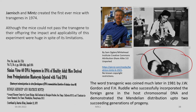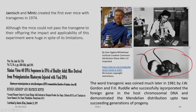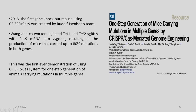At the time, the word 'transgenic' was not known. It was coined in 1981 by J.W. Gordon and F.H. Ruddle, who successfully incorporated the foreign gene into the host chromosome DNA and demonstrated Mendelian distribution up to two succeeding generations of progeny, unlike in the earlier case.